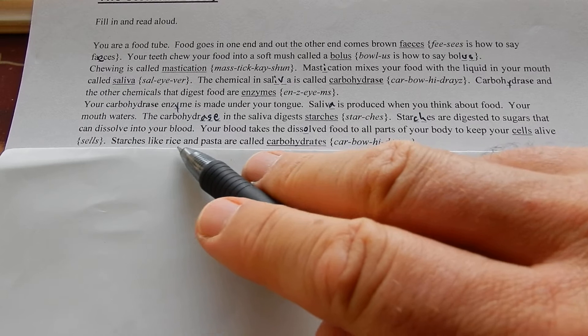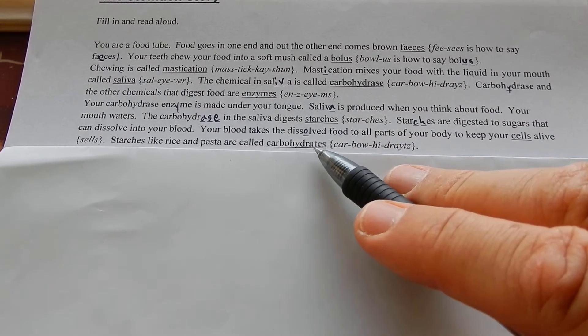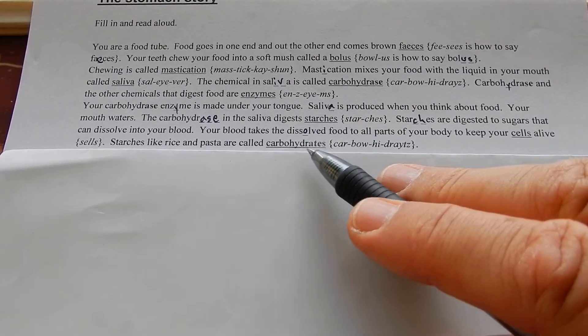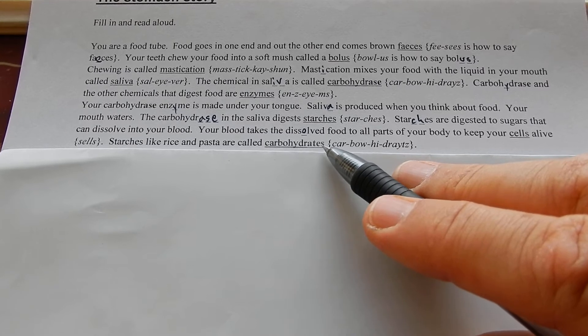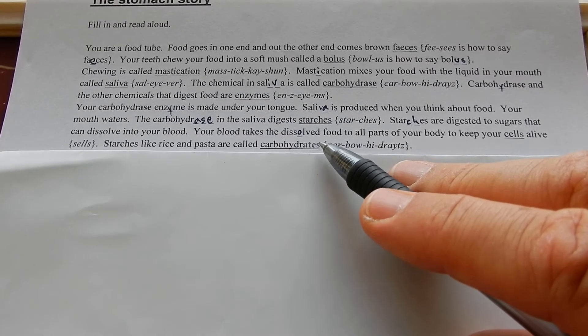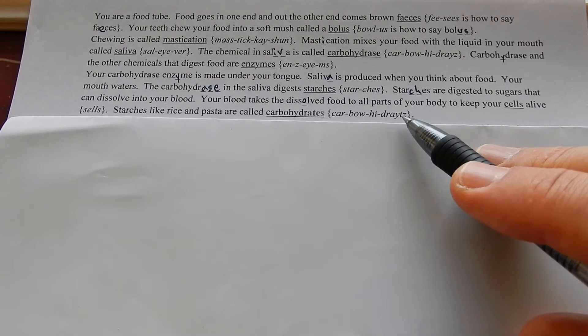Starches like rice and pasta are called carbohydrates. A-T-E-S means there's oxygen in a chemical.